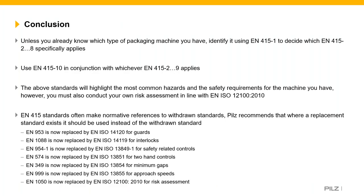In conclusion: unless you know what type of packaging machine you have, identify it using EN 415 part 1. Then use EN 415 parts 9 and 10 in conjunction with whichever EN 415 standard applies to your machine. Parts 2 to 8 will highlight the most common hazards and safety requirements; however, you must conduct your own risk assessment. Many EN 415 standards make reference to withdrawn and out-of-date standards — where replacement standards exist, use them.